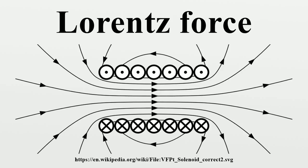Lorentz force and Faraday's law of induction: Given a loop of wire in a magnetic field, Faraday's law of induction states the induced electromotive force in the wire is given by the magnetic flux through the loop, where B is the magnetic field, Σ is a surface bounded by the closed contour ∂Σ at time t, and dA is an infinitesimal vector area element of Σ. The sign of the EMF is determined by Lenz's law. Note that this is valid for not only a stationary wire but also for a moving wire. From Faraday's law of induction and the Maxwell equations, the Lorentz force can be deduced. The reverse is also true: the Lorentz force and the Maxwell equations can be used to derive Faraday's law.